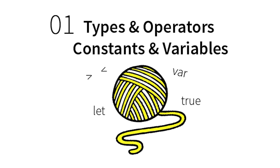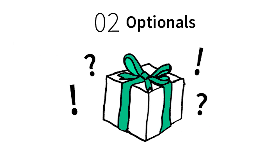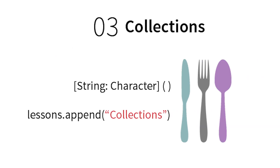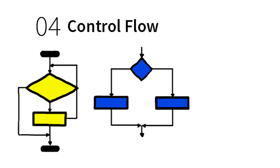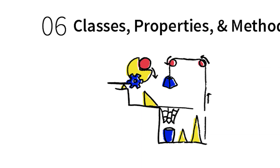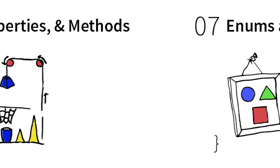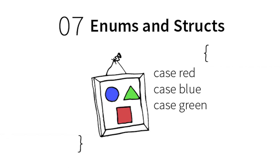We'll start out with some basics of types and operators, and practice manipulating strings and declaring variables and constants. Then we'll move on to what is arguably Swift's most unique and confounding feature, optional types. We'll talk about collections and control flow, including lots of practice with switch statements. Functions and classes, enumerations and structs, which are considerably more powerful in Swift than in other languages.